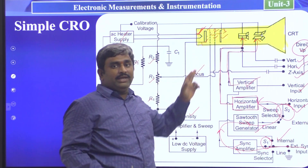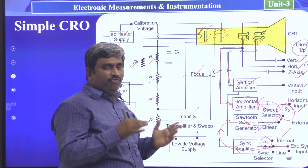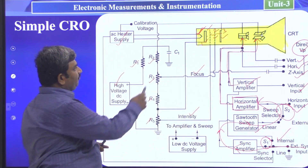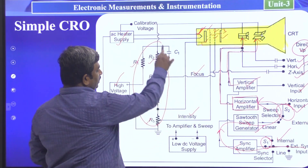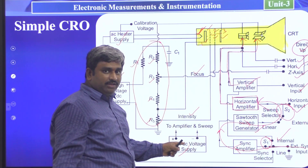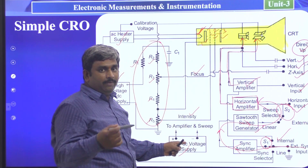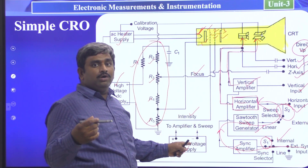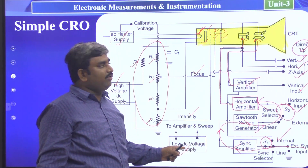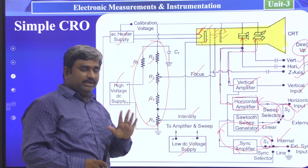We can control the brightness, intensity, and focusing levels of the electron beam. This completes the resistor divider network section. The low DC voltage supply circuits are connected to the different DC circuits available on the motherboard of the CRO. This is the total block diagram construction part.